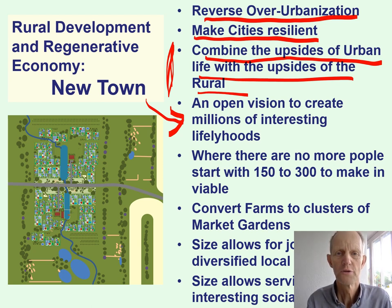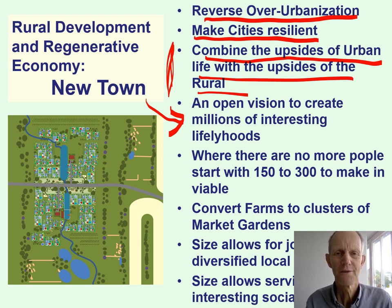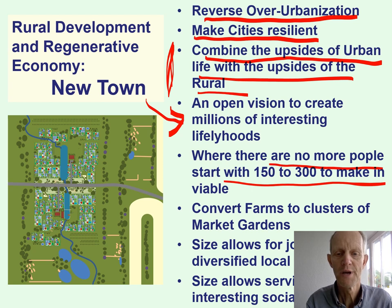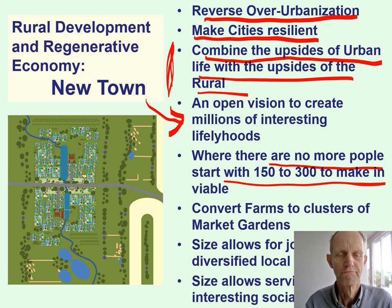If you want to move to the rural, you want to have an interesting environment — beautiful landscape and all that — but the main thing is that most people want to have interesting people around. To make it viable in regions where nothing much is left, which is increasingly common with the depopulation of rural areas, it would be wise to start with maybe 150 to 300 people depending on the culture. That's a good size where enough interesting people are there and children of the same age are there.